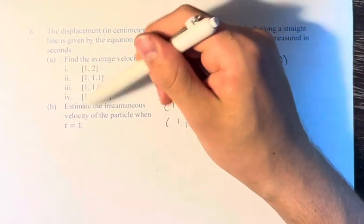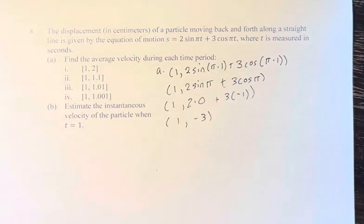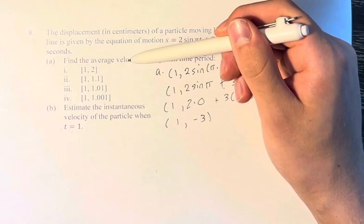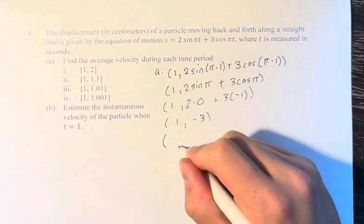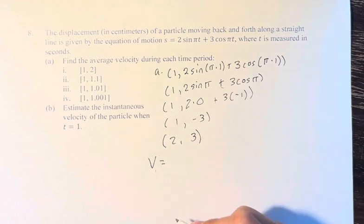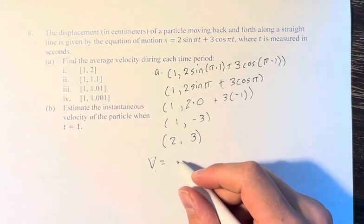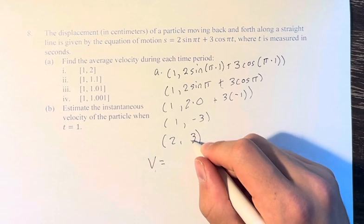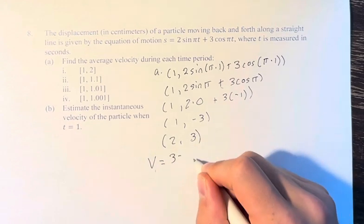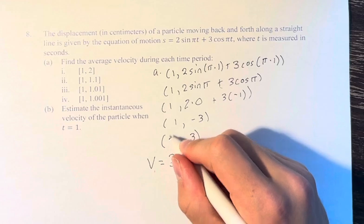You find all of these points, and then the velocity over a period, let's say from point (2, 3) to our first point, will be the slope between these two points. So you would have the change in y, which is 3 minus negative 3, over the change in x, 2 minus 1.